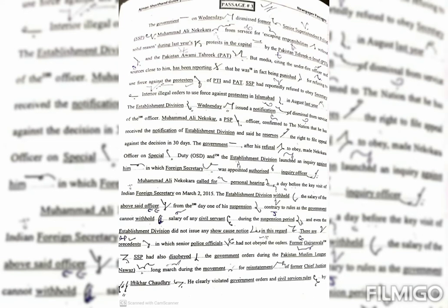The government, after his refusal to obey, made Nekokara Officer on Special Duty and the Establishment Division launched an inquiry against him in which a Foreign Secretary was appointed as authorized inquiry officer.